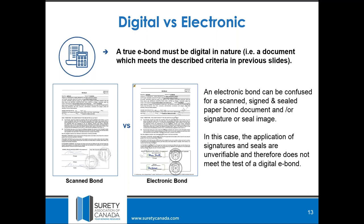There are three basic requirements for a digital bond to be valid. First, the identity of the individual that signed it has to be verified. Second is the intent to sign. And the third is that the document has not been altered — which is the integrity of the document, not altered during and after the signing process. That's what, technically according to the e-commerce act, defines a digital signed document. The bond is one step more secure because it also has the seal in addition to the signature.